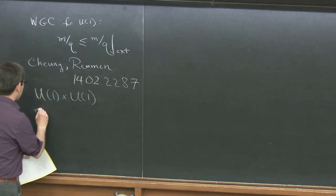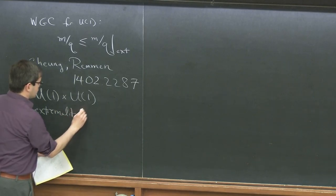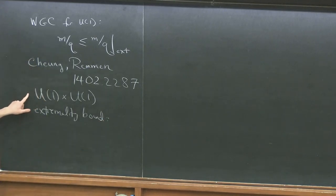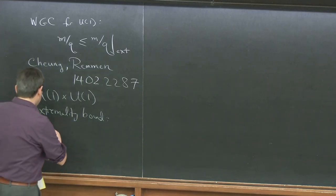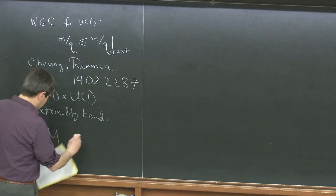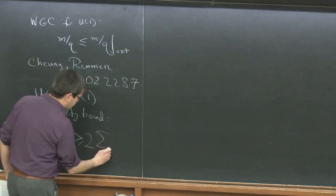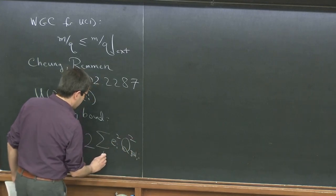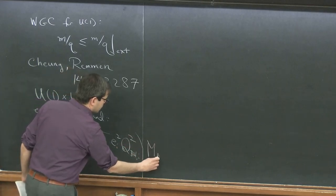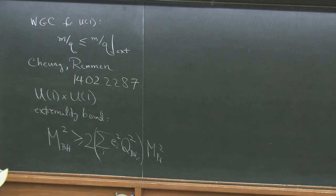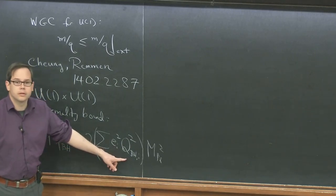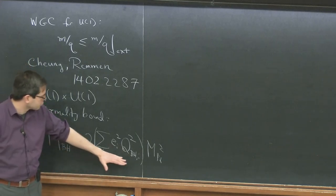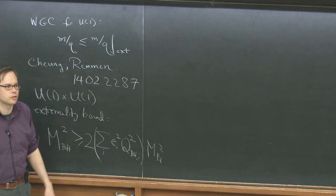The reason is that the form of the extremality bound, in the simplest case where the gauge fields are not mixing with each other, looks like this: if I have a black hole that carries charges under both gauge groups, there's an extremality bound that depends on the square root of the sum of the squares of the charges under the individual gauge groups. This is because there are electric fields for each gauge group outside the black hole, each storing some energy.